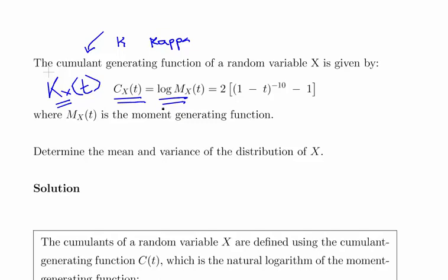There are actually two cumulant functions, there's a thing called a second cumulant function which is a little bit different. We'll just stick with the question here. The cumulant generating function is defined as 2 times (1 minus t) to the power of minus 10 and then minus 1.